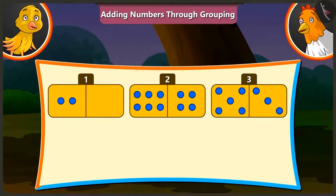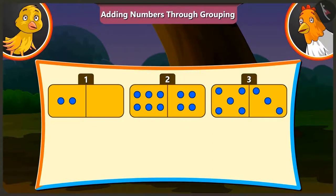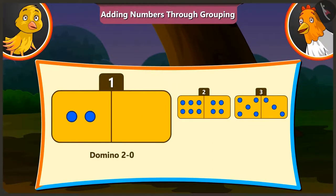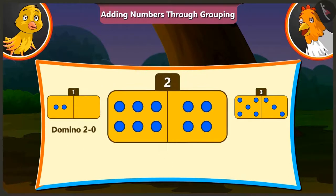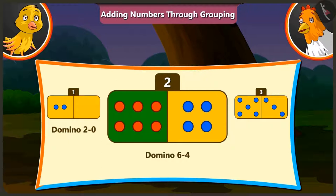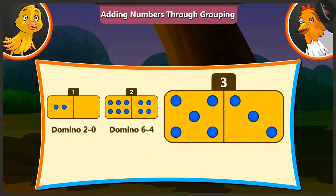Peeloo, look! There are three domino cards kept here. The first card is domino 2, 0. The second card is domino 6, 4. And the third card is domino 5, 3.